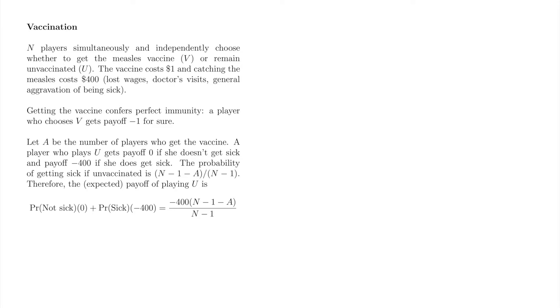The bad news is that measles is ridiculously contagious. The chance of getting the measles decreases as the number of vaccinated players increases. We let A denote the number of players who vaccinate, and let (N-1-A)/(N-1) be the probability that an unvaccinated player gets the measles. This expression is the fraction of the population, excluding oneself, that is unvaccinated.